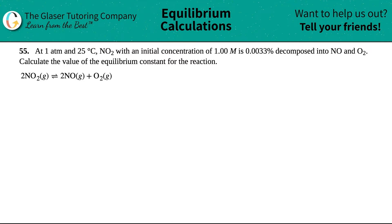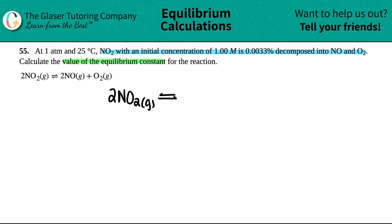Problem 55: at 1 atm and 25°C, NO₂ with an initial concentration of 1.00 M is 0.0033% decomposed into NO and O₂. Calculate the value of the equilibrium constant for the reaction. The reaction is: 2 NO₂(g) ⇌ 2 NO(g) + O₂(g).